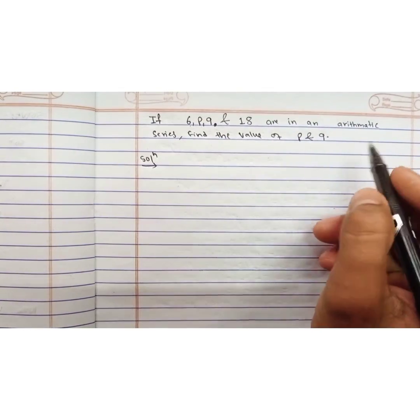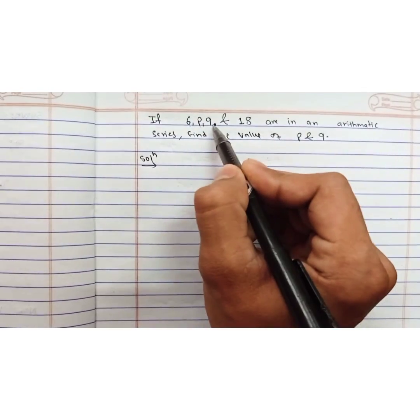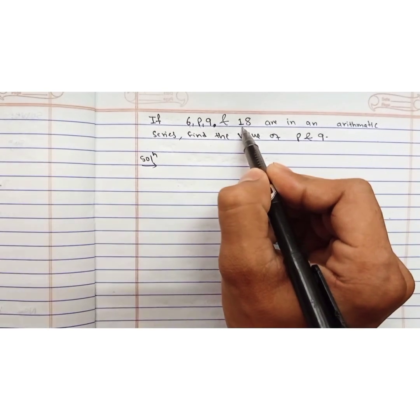You have to find the value of p and q. For that, we identify that 6 is the first term, p is the second term, q is the third term, and 18 is the fourth term.